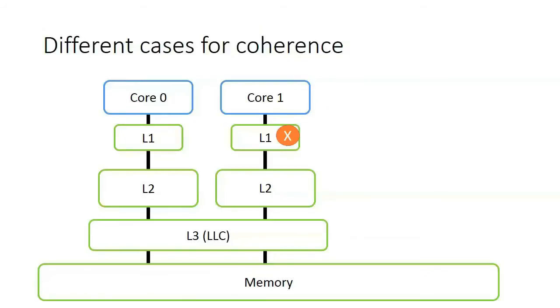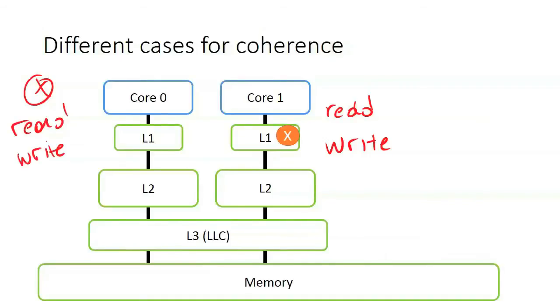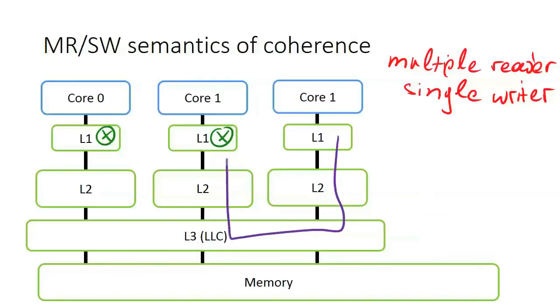The coherence needs to handle different combinations of events. So what happens if core 1 has an object x in the L1 because it has read the data or it wrote to the data and then core 0 wants to access x for a read or a write. In general modern coherence protocols implement multiple reader single writer semantics. This means that a copy of the data can exist in read mode in several private caches but then if a core wants to write on the data it has to invalidate all the pre-existing copies of this memory object.